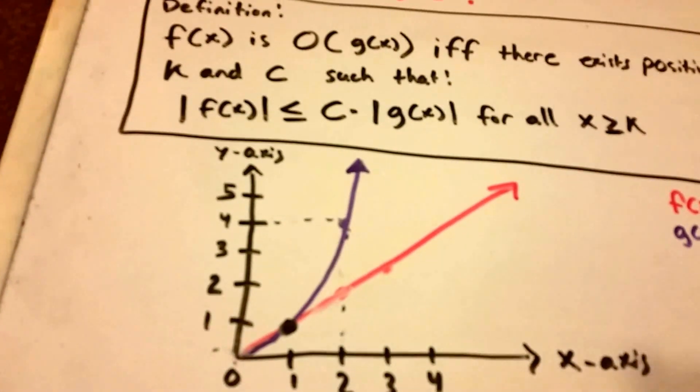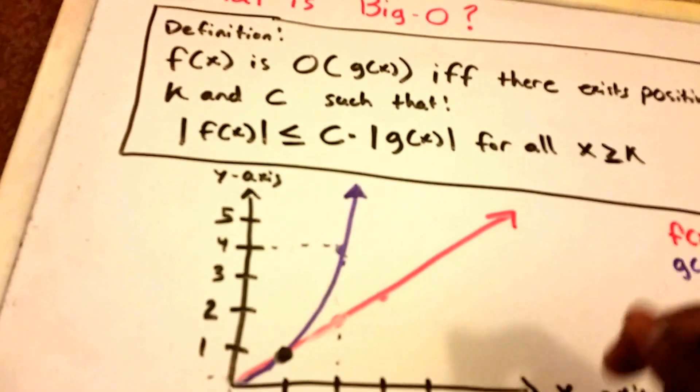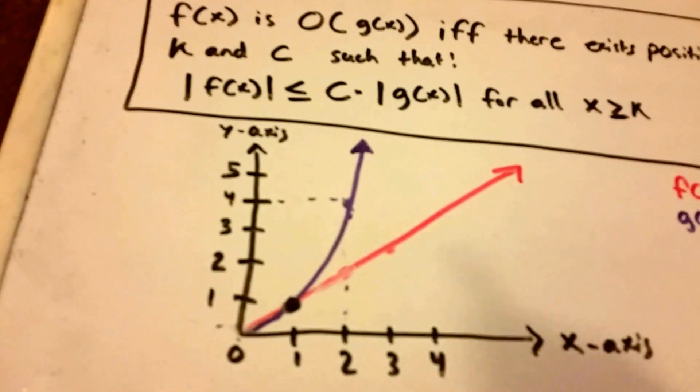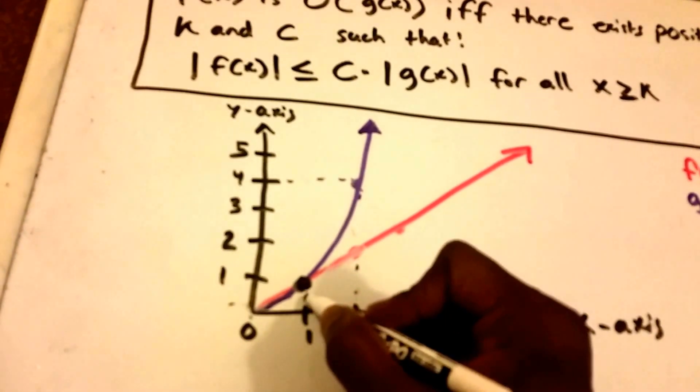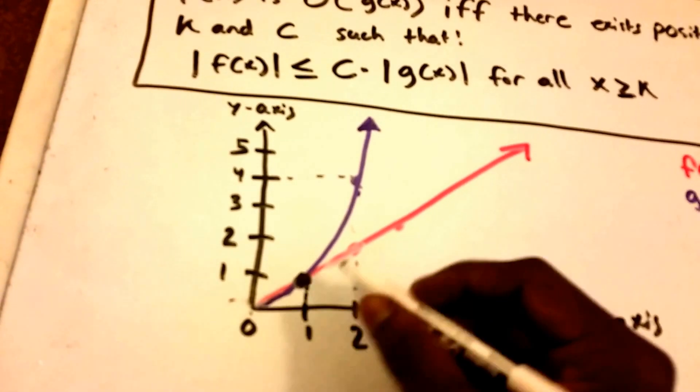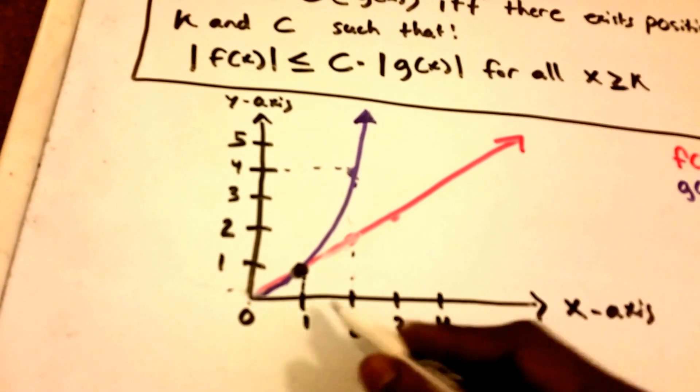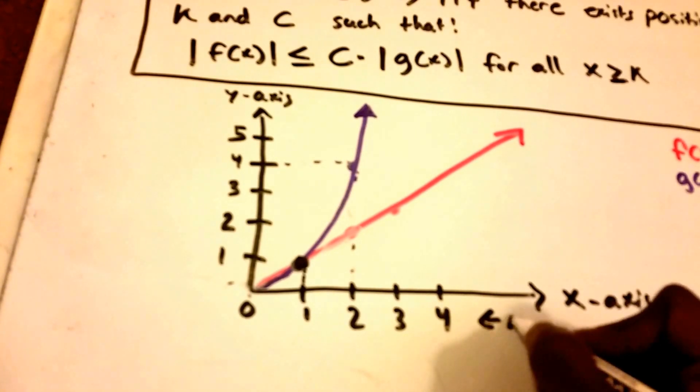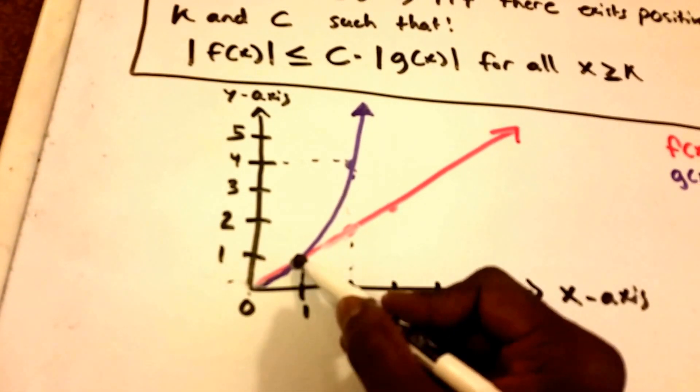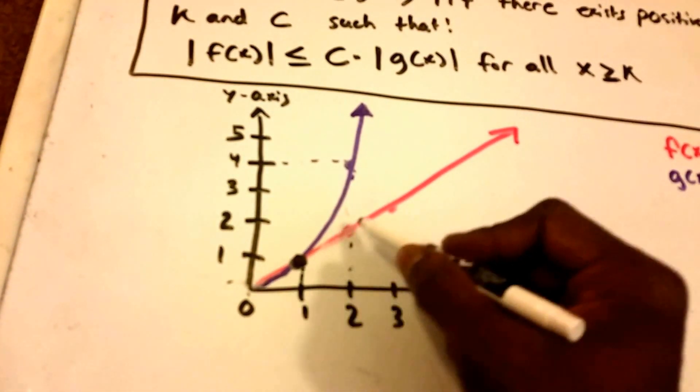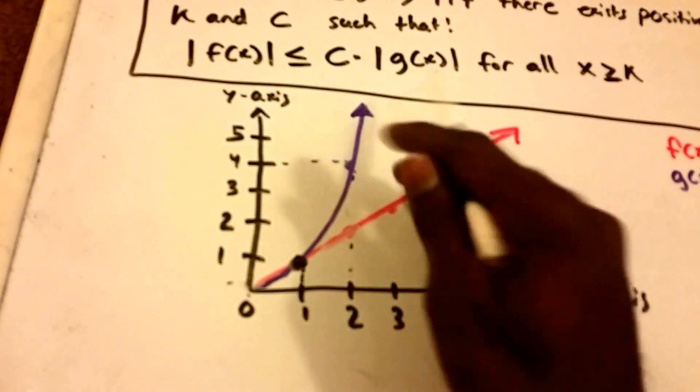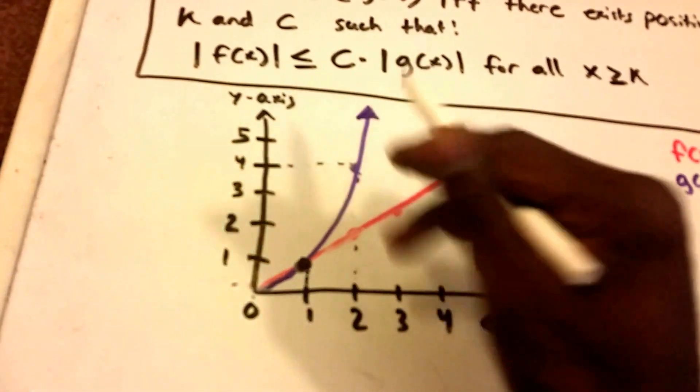Now in this case, the constant C is 1. So all this is saying is, right here, for any values of X, so these are all values of X here, after X equals 1, our function f of X will never grow faster than our function G of X.